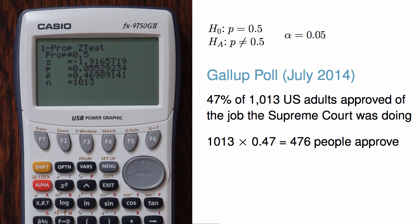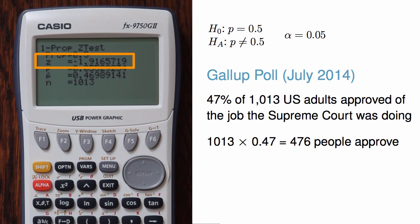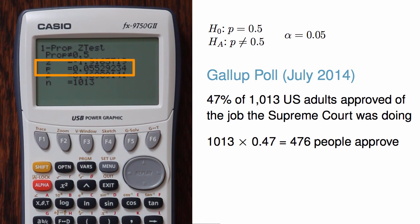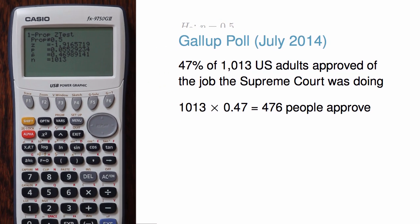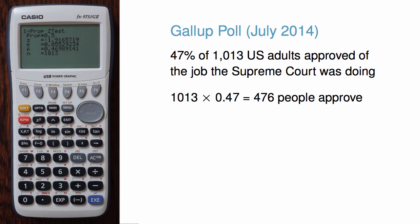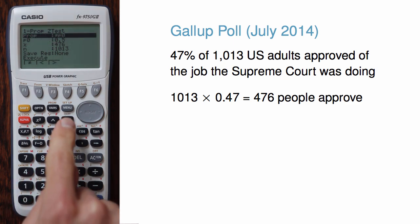The results show us several pieces of information. We have an alternative hypothesis of P not equal to 0.5, our z-test statistic is negative 1.917, the test's p-value is 0.055, the sample proportion is 0.47, and the sample size is 1,013. Because the p-value is larger than alpha, we do not reject the null hypothesis. That is, we don't have strong evidence to conclude the approval rating is different than 50%. Now I can exit out to the main stat page.